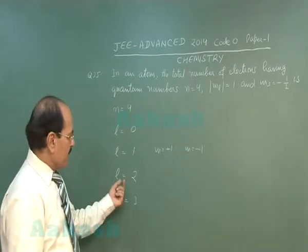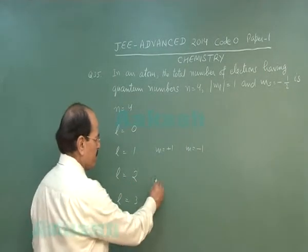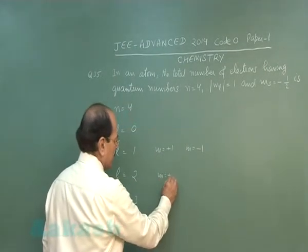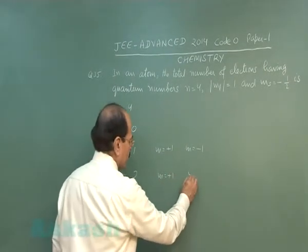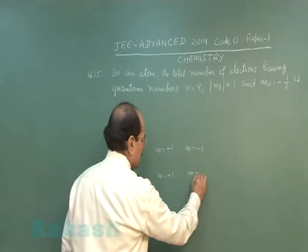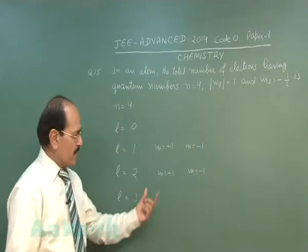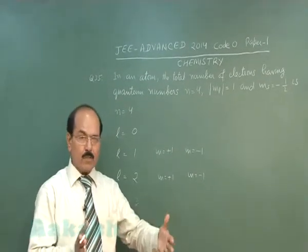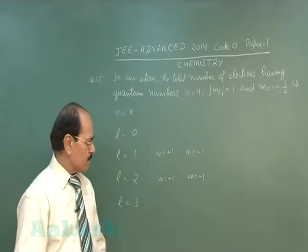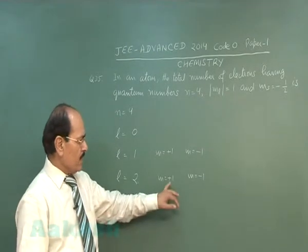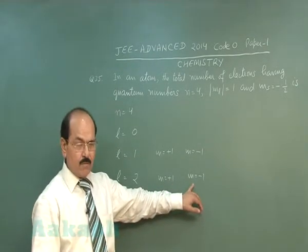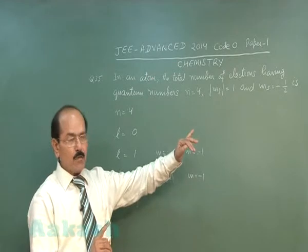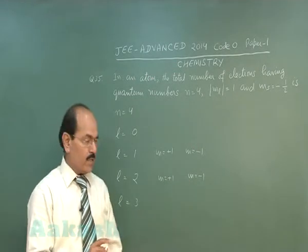Similarly, for l equal to 2, we have to select only the 2 values of the magnetic quantum number where mod ml equals 1, out of the 5 possible values. Again, each orbital will have 1 electron having spin quantum number minus half.